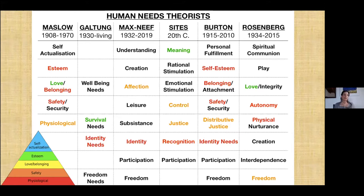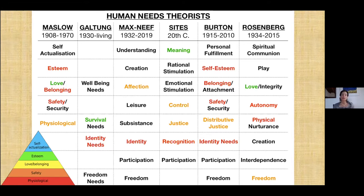Conflict and suffering was the major motivation for why I created what I have been trying to figure out. Some of the people I went to, in addition to Maslow, are Galtung, who was the father of peace studies; Max-Neef, who was a major innovator in human scale development — very relevant for those of us interested in social change, the transition movement, which I've been part of, and the sustainability movement.